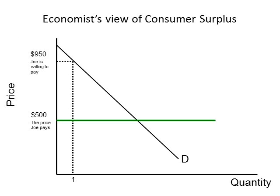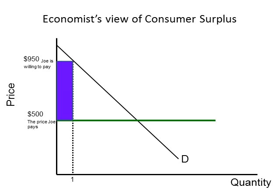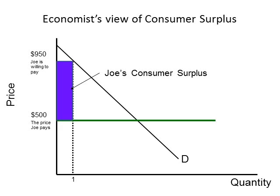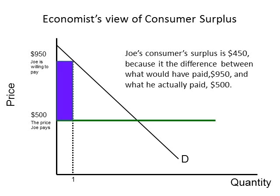As you may remember from the scenario, Joe was willing to pay $950 for one TV, and notice he was only going to purchase one TV. So we put $950 on the graph indicating what Joe was willing to pay. Notice this creates a rectangle — that rectangle is Joe's consumer surplus. The consumer surplus is the difference between the price Joe was willing to pay and the amount he actually paid. Since Joe purchased one HDTV, the quantity does not impact the value. Since he was willing to spend $950 but only paid $500, his consumer surplus is $450.